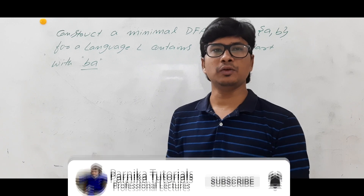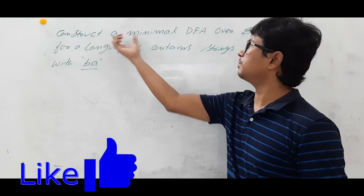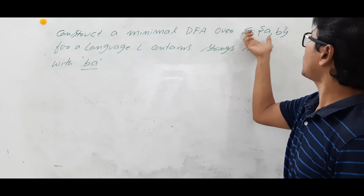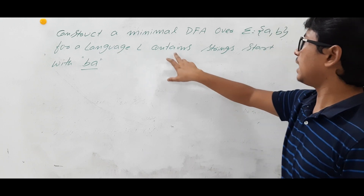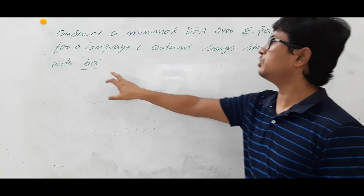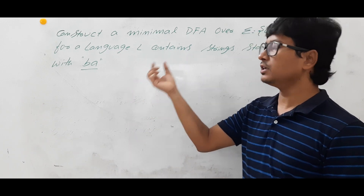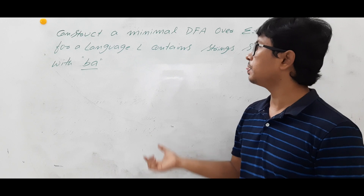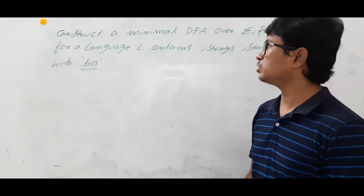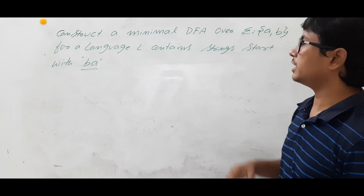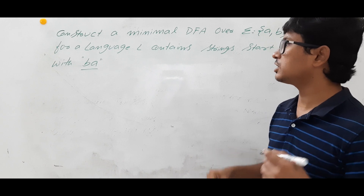Good morning friends, I hope everyone is doing well. In this video we will construct a minimal DFA over alphabets A, B for a language L containing strings that start with BA. So they are asking us that if you have a string, it should always start with BA — those strings only will belong to language L on alphabets A, B.